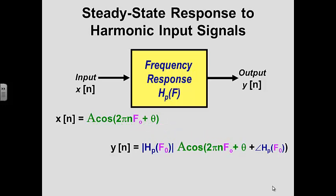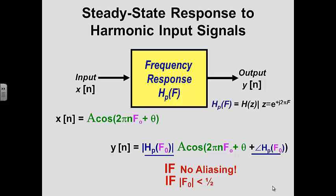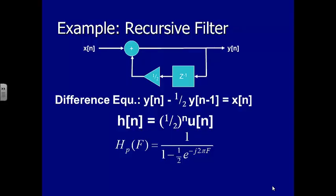That approach was easy with Fourier, but if we're using Z-transforms, we haven't necessarily derived H of F — we've got H of Z. We need H of F for steady state problems, but what we're working with is H of Z. How do we connect those? Also, this whole argument only holds if you don't have aliasing; if you do, we have to readjust our frequency to the alias frequency.